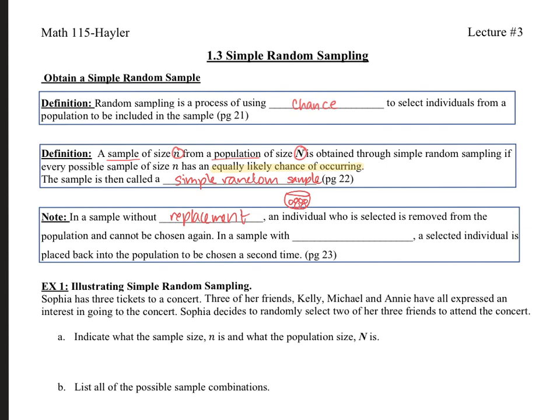So there's replacement versus without replacement. Let me go ahead and read this again. In a sample without replacement, that means you're taking them out and your sample size is slowly dwindling. An individual who's selected is removed from the population and cannot be chosen again. In a sample with replacement, a selected individual is placed back into the population to be chosen a second time, possibly.